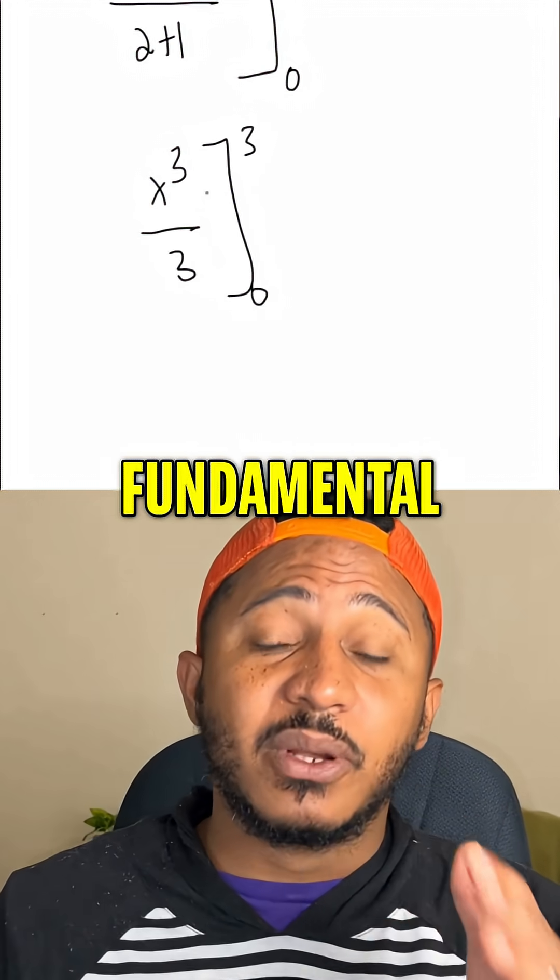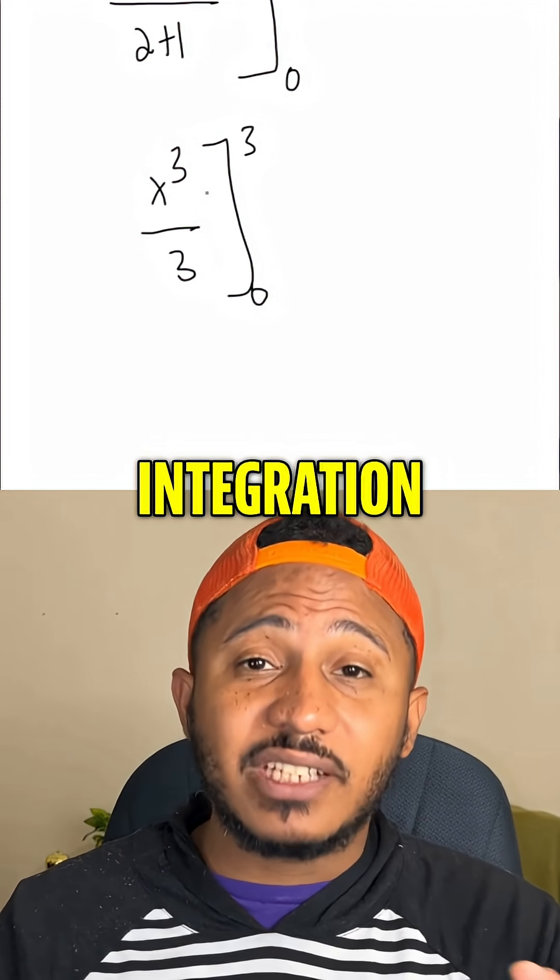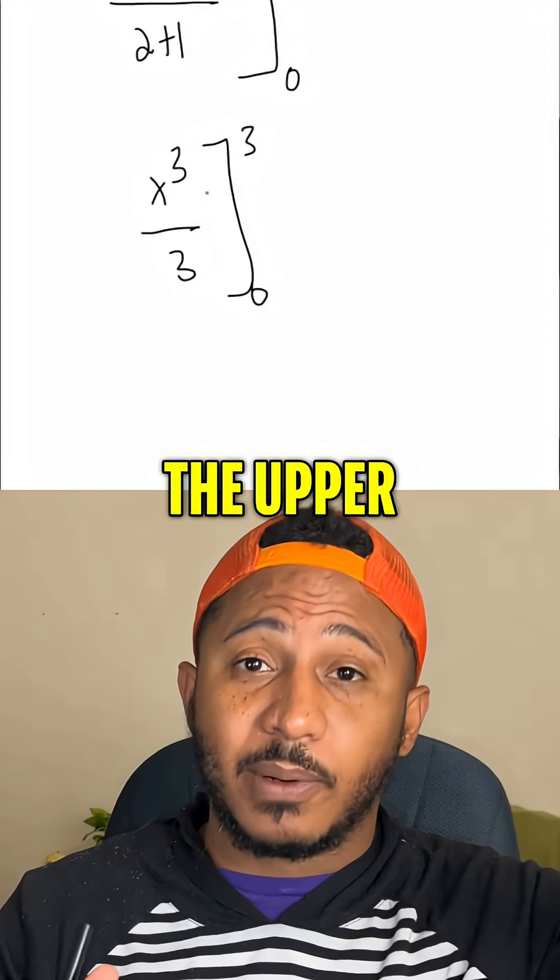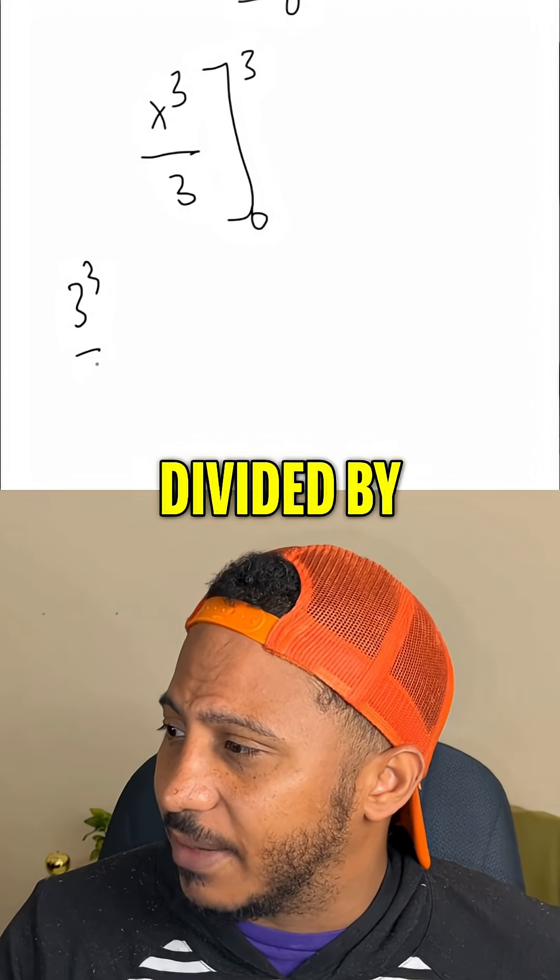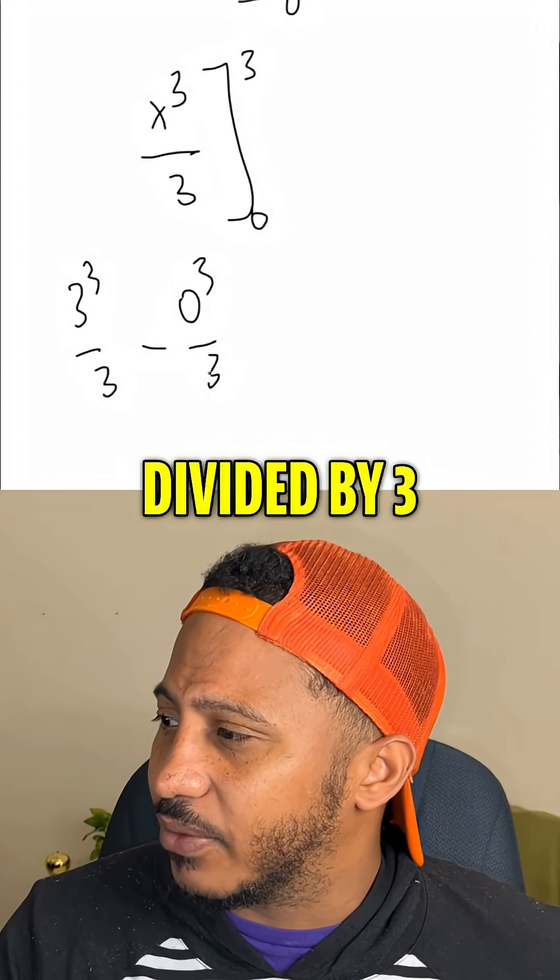Now, by our fundamental theorem of calculus, we know we can just plug in those limits of integration and then subtract the two. The upper limit, subtraction, and then the lower limit. So this becomes 3 cubed divided by 3 minus 0 cubed divided by 3.